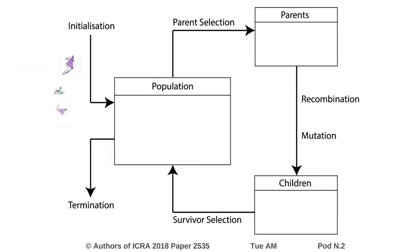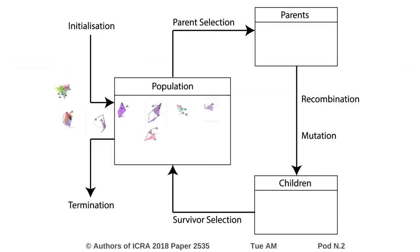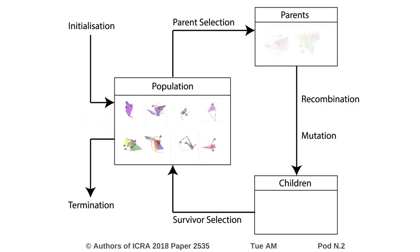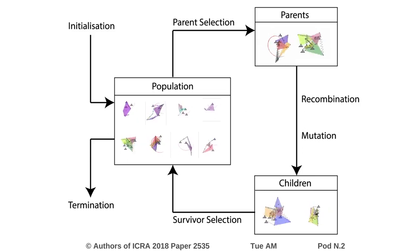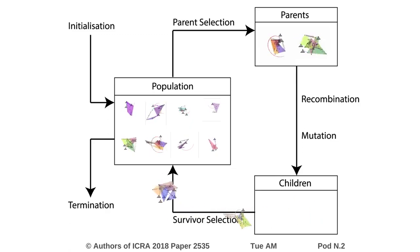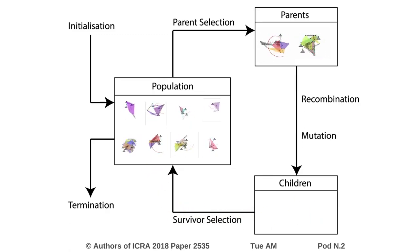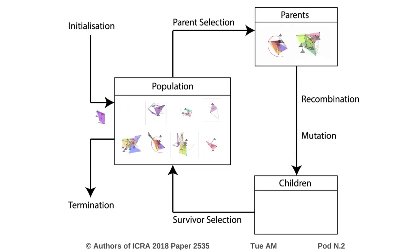In our evolutionary algorithm we first initialize a population with randomly generated mechanisms. Next, we select parents that are lucky and good enough to reproduce. Through recombination and mutation, children are formed that will replace inferior solutions in the population. This process is repeated many times and we are left with an optimized solution after termination conditions are met.